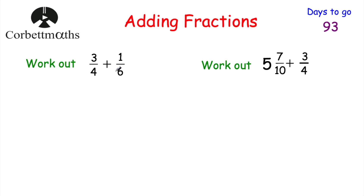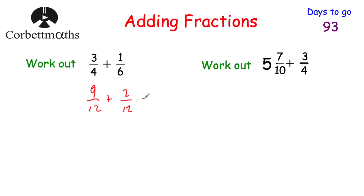For three quarters plus one sixth, we need a common denominator. The lowest common multiple of 4 and 6 is 12. To get from 4 to 12 we multiply by 3, so 3 times 3 is 9. To get from 6 to 12 we double it, so 1 times 2 is 2. We get nine twelfths plus two twelfths, which equals eleven twelfths.